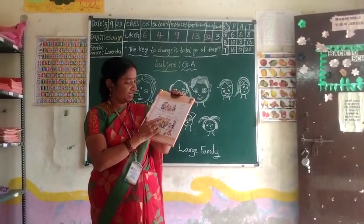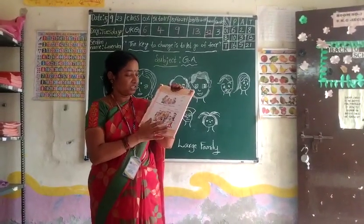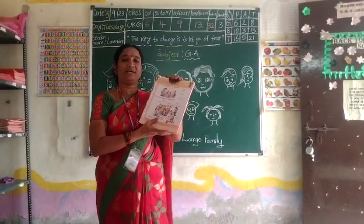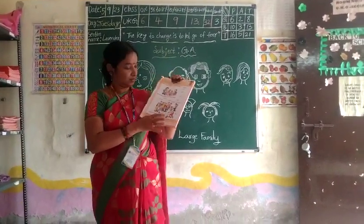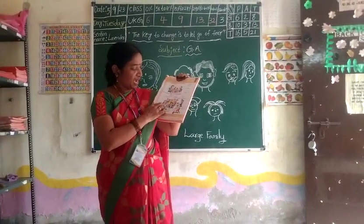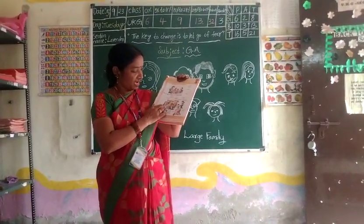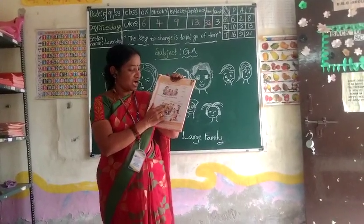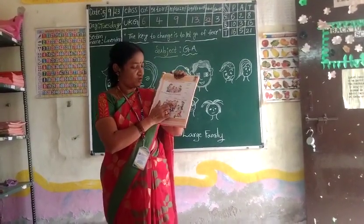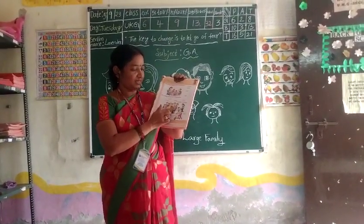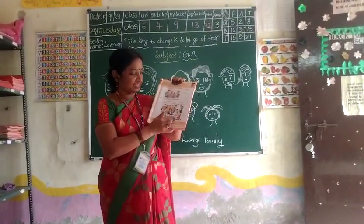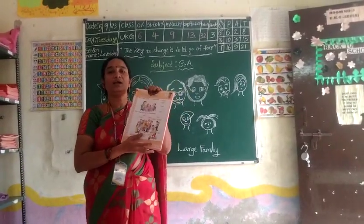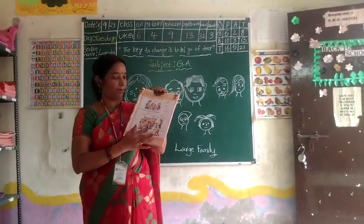Here is another family — lots of family members. More members there. Grandfather, grandmother, uncles, aunts, father, mother, cousins, and Rhea. These are called a large family.